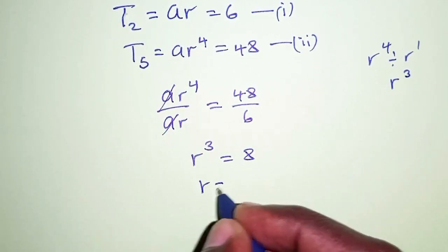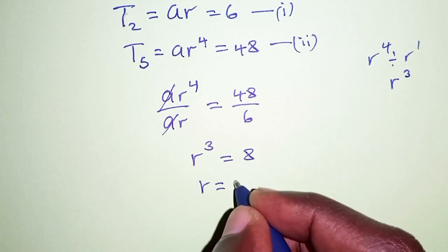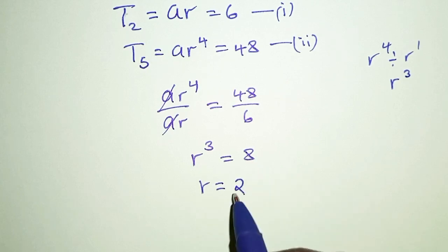And then the right hand side, 48 divided by 6 is 8, and that means if we find the cube root for both the left hand side and right hand side, r becomes 2. The cube root of 8 is 2.